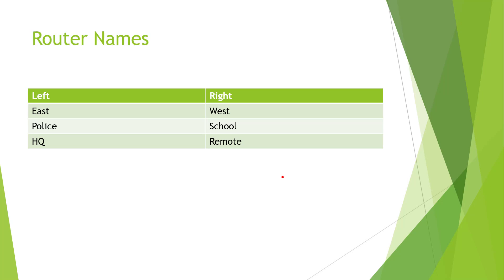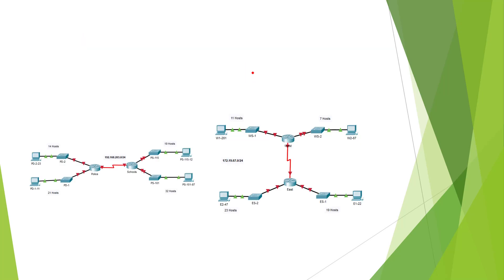What do I mean by left and right? The three scenarios start off with east and west, police and school, or HQ and remote. On one side of the screen will be the left side, and one side will be the right side. These are the two big scenarios - left and right. You're going to notice left and right.